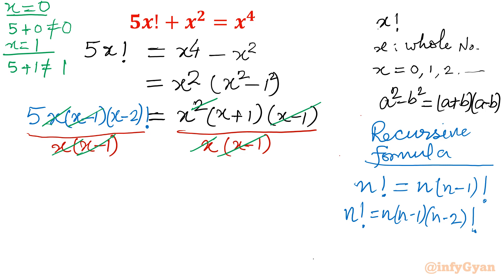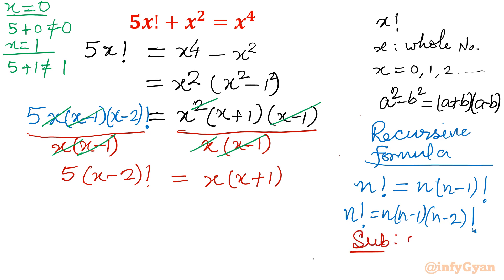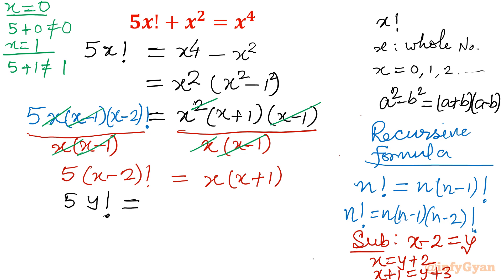After canceling, we get 5·(x-2)! = x·(x+1). Now I introduce the substitution x - 2 = y, so x = y + 2 and x + 1 = y + 3. Substituting these values, the equation becomes 5·y! = (y+2)(y+3).